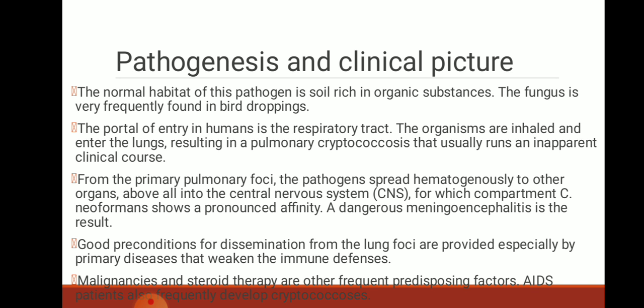From the primary pulmonary foci, the pathogen spreads hematogenously to other organs, above all into the central nervous system, for which it shows a pronounced affinity, resulting in a dangerous meningoencephalitis. Good preconditions for dissemination from lung foci are provided especially by diseases that weaken immune defenses. The predisposing factors include malignancies and steroid therapy. AIDS patients also frequently develop cryptococcosis.